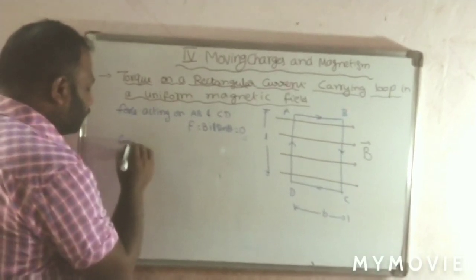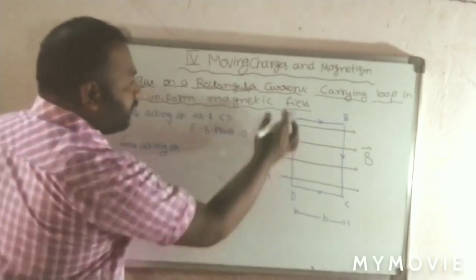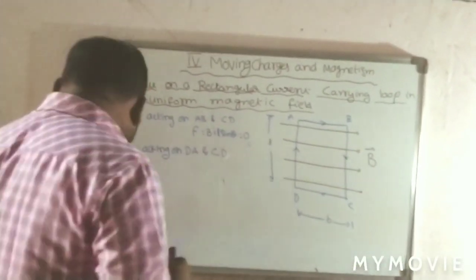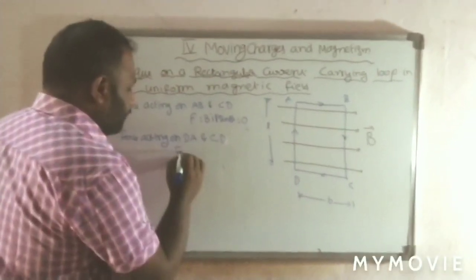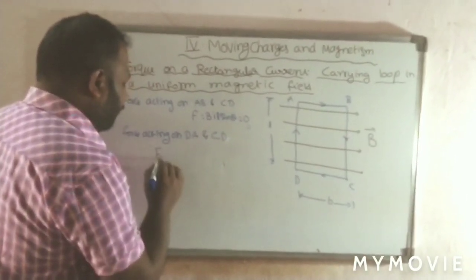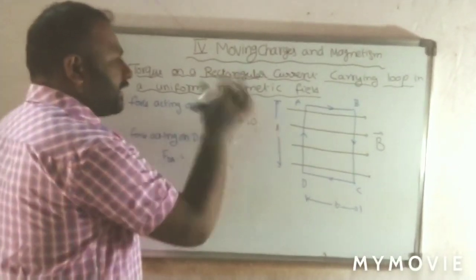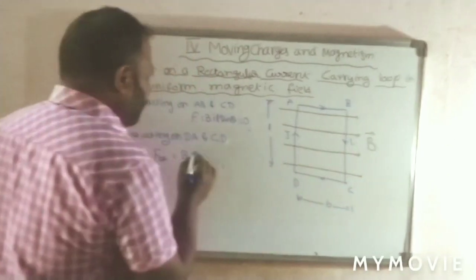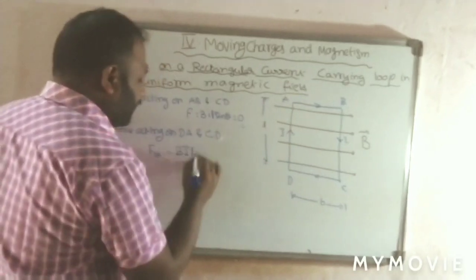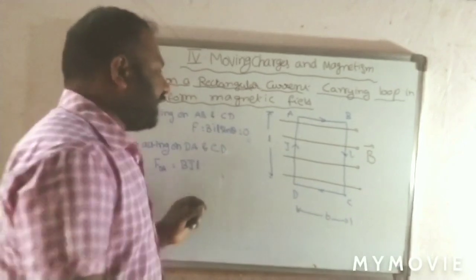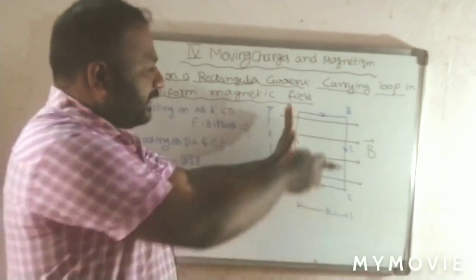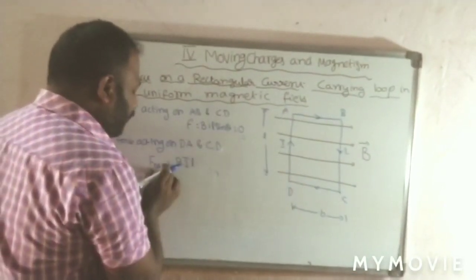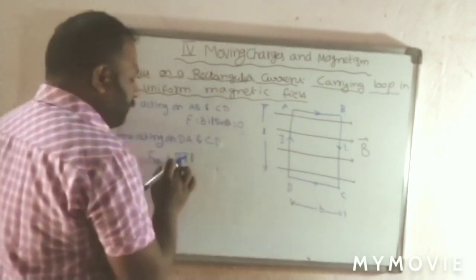Now we observe the force acting on conductor DA and conductor BC. The force on DA is F = BIL sinθ. The magnetic field is B, current is I, length is L. What is the angle between conductor DA and the magnetic field? The conductor and field are perpendicular to each other, so the angle is 90 degrees and sin 90° = 1. Therefore, force acting on conductor DA is BIL. Similarly, force acting on conductor BC is also BIL.